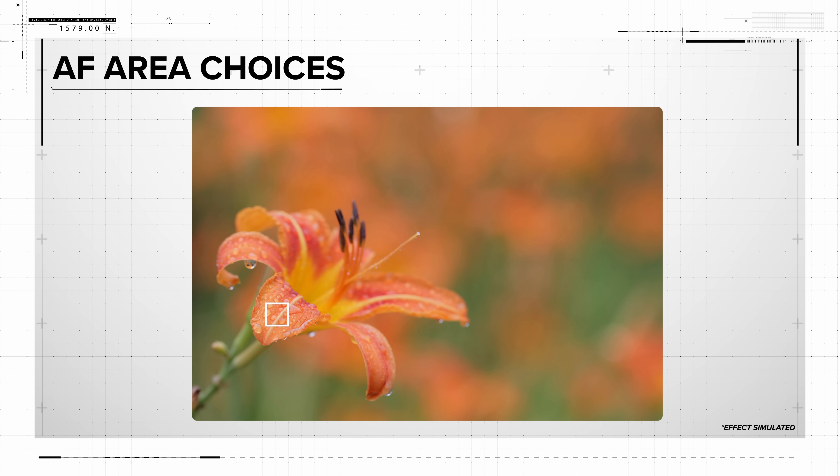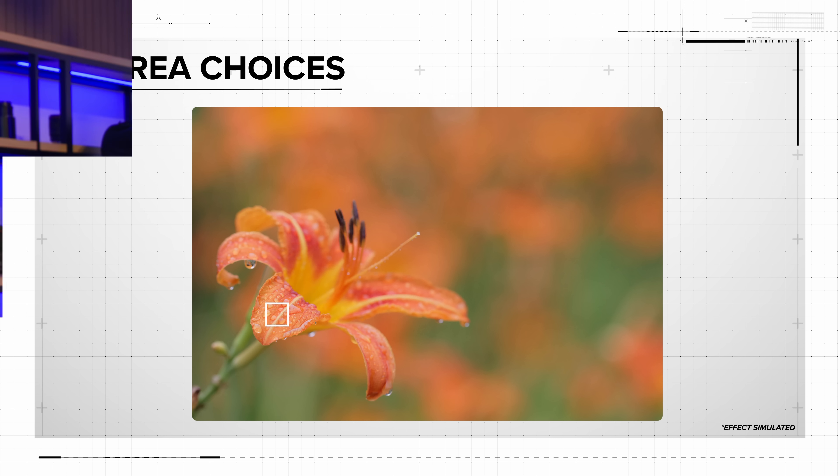These locked AF area options will be important in some situations. They lock out any focus tracking and mean that the photographer alone positions the active AF area. Once positioned, it will not change size or try to identify what it's upon, and then move if composition changes or the subject itself begins to move around the frame.